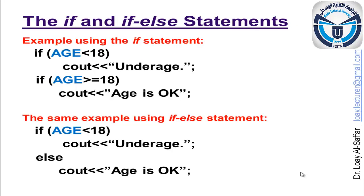Let's make a review. If we use the if statement, we need to check twice: if age is less than 18, display the message 'underage'; then check if age is greater than or equal to 18, display 'age is okay'. But using the if-else statement, we don't have to write the second if. If age is less than 18, we display 'underage'; otherwise, we display 'age is okay'.